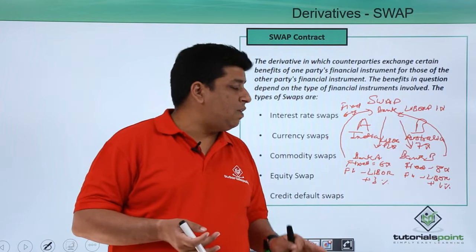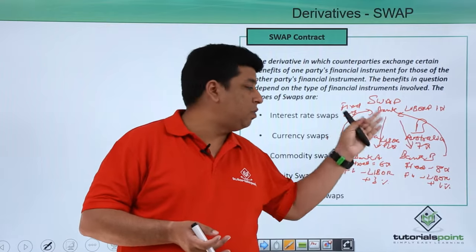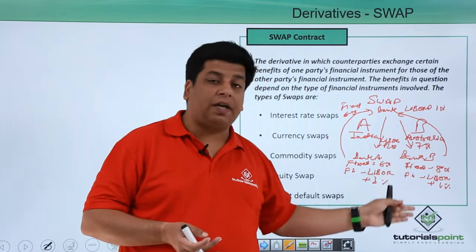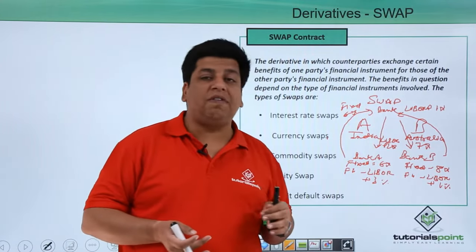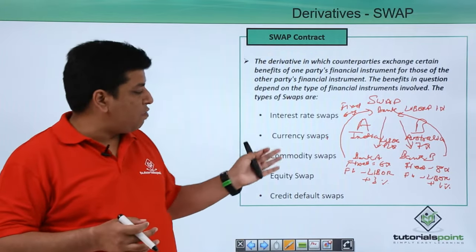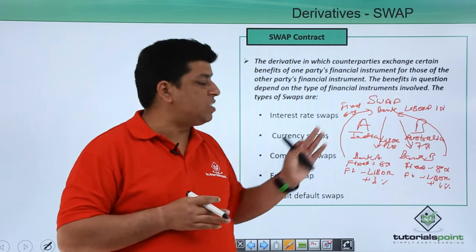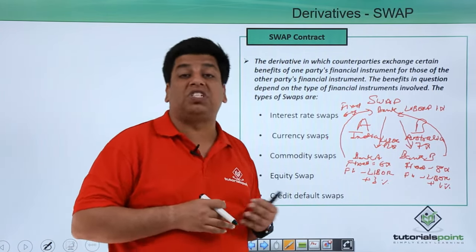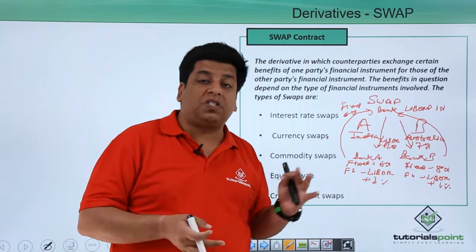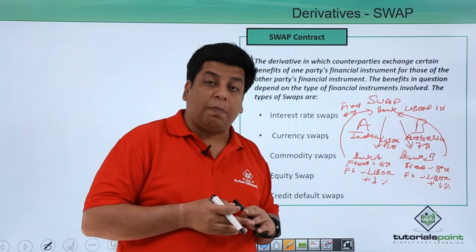Company B which needed the loan at fixed is taking loan from its bank B at LIBOR plus 1% and giving it to the swap bank, and swap bank is giving the interest rate to company B at 7% per annum. Company A wanted the loan at LIBOR, it is getting at LIBOR plus 2% which is cheaper than LIBOR plus 3% that would have been given by bank A to company A.